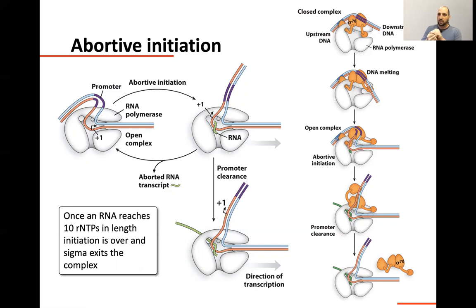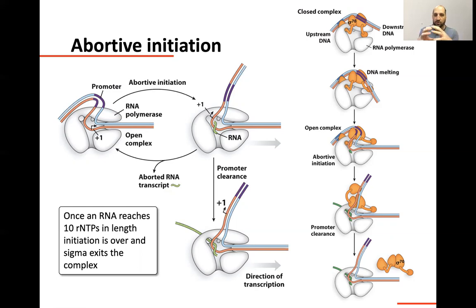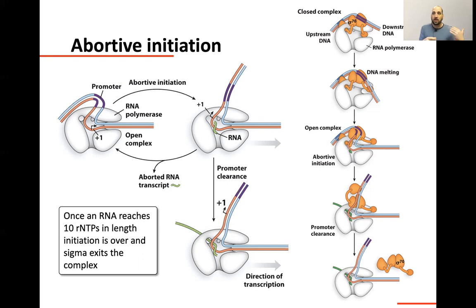Both in bacteria and in eukaryotes, there's a process called abortive initiation. What occurs here is the polymerase starts, brings a couple of nucleotides in, then fails the process and goes back to where it was — it starts again, fails the process, and goes back. There are multiple aborted transcripts. This cycles back through multiple times, forming little pieces of RNA that get spit out and the process begins again. Part of what's going on is that this polymerase is error-prone — it's making mistakes, not bringing the right NTPs in, and spitting out mistakes.